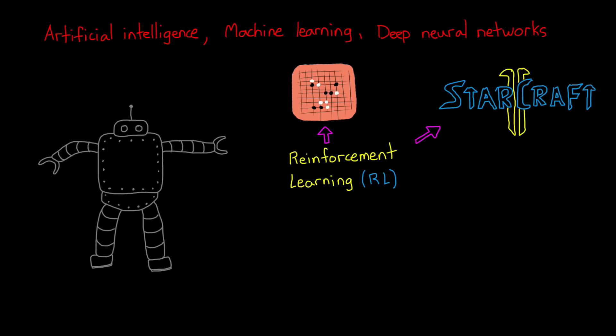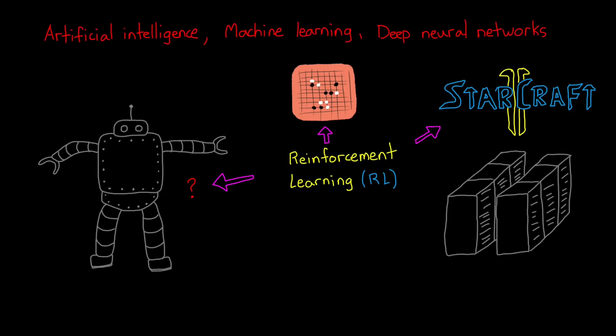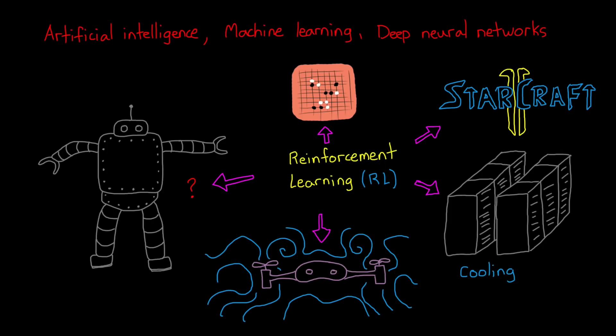So naturally you might be thinking, well if it can do that, why can't I use reinforcement learning to control my robot, or cool my data center, or stabilize a drone in a highly dynamic and turbulent flow? Well let's talk about that.